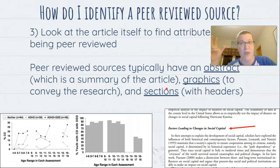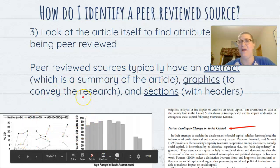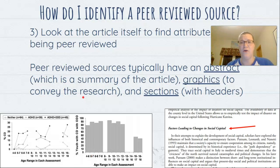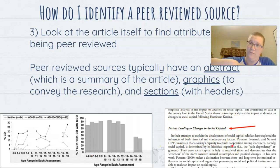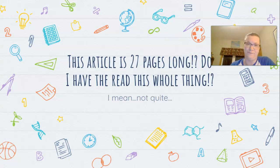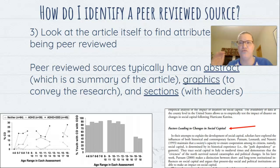Peer-reviewed sources typically have graphics to convey their research — sometimes an entire page or more of graphics. They also have separated sections with headers, like 'Factors Leading to Changes in Social Capital,' indicating everything in that section is about that topic. These are all ways to identify if you have a peer-reviewed source. Remember, you want peer-reviewed sources. The next video will be about how to read peer-reviewed sources.